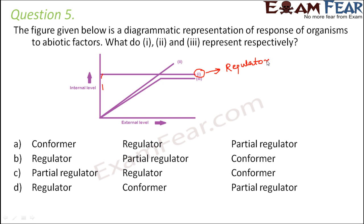Conformers are opposite to regulators. In conformers there is very little homeostasis — their internal temperature changes as per the external temperature. So the second curve represents conformers, where as external temperature increases, internal temperature also increases. The third curve behaves like a conformer initially but later behaves like a regulator, so we call it a partial regulator.